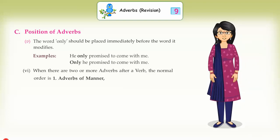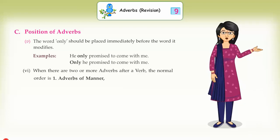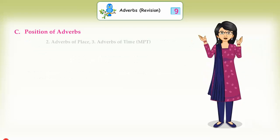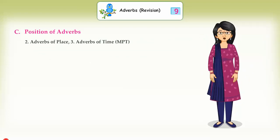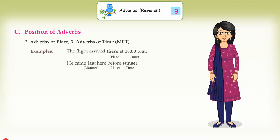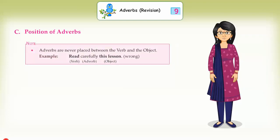(6) When there are two or more adverbs after a verb, the normal order is: (1) Adverbs of Manner, (2) Adverbs of Place, (3) Adverbs of Time — MPT. Examples: The flight arrived there at 10 pm. He came fast here before the sunset. Note: Adverbs are never placed between the verb and the object. Example: 'Read carefully this lesson' — wrong.